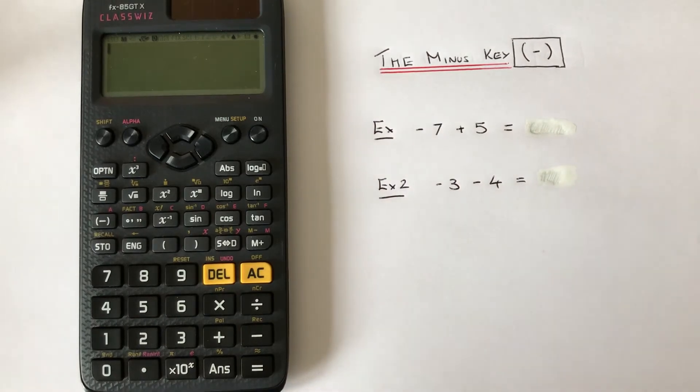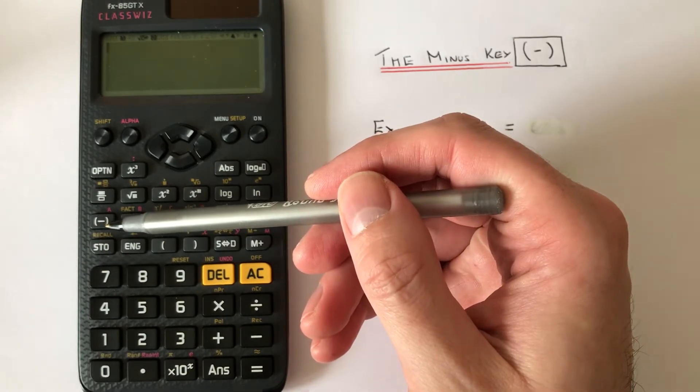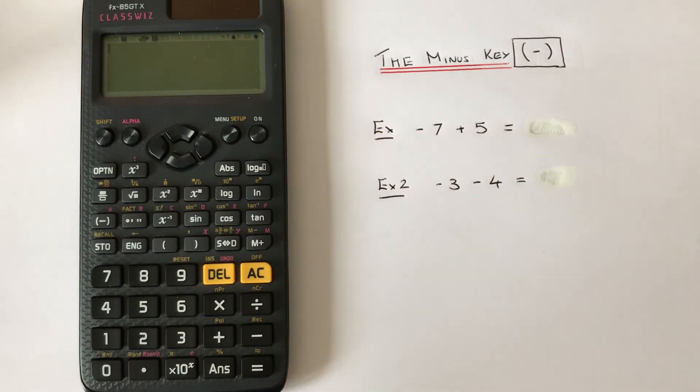Hi guys, welcome back. Today I'm going to show you how to use the minus key on a Casio Classwiz calculator. The minus key can be found on the third row of the scientific functions, and you can use this to type in negative numbers.